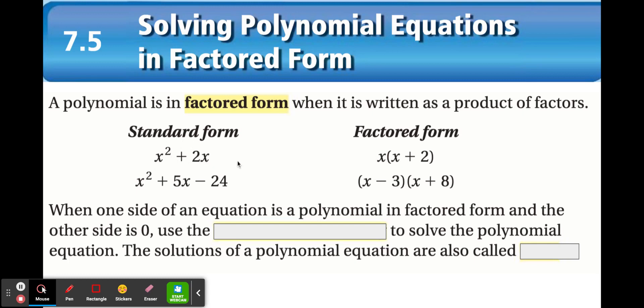So x squared plus 2x in factored form would be x times the quantity x plus 2. It's like the distributive property - if you multiply that, you get your standard form. Standard form we know is descending order of the variable. So factored form would be the two polynomials that you would have multiplied together, and their product is the standard form trinomial that you get. When one side of an equation is a polynomial in the factored form and the other side is equal to 0, we could use the 0 product property to solve the polynomial equation. The solutions of this equation we could call roots.